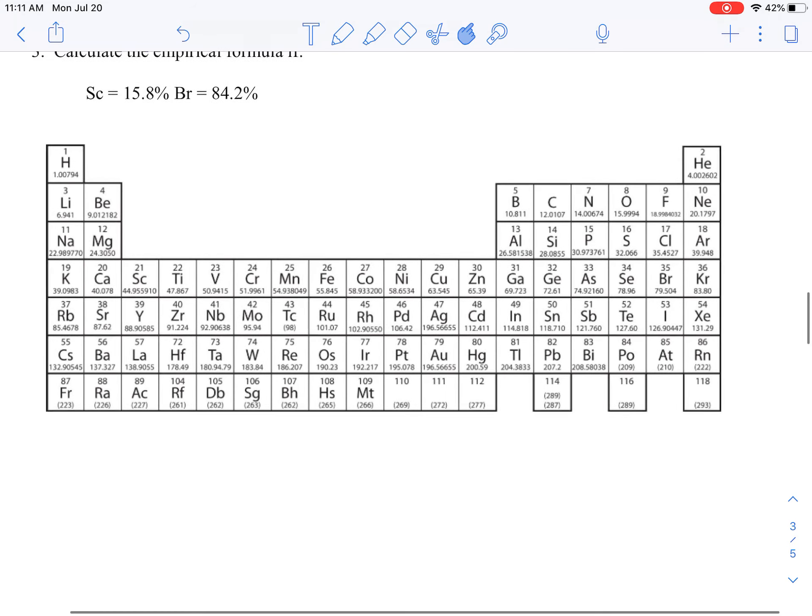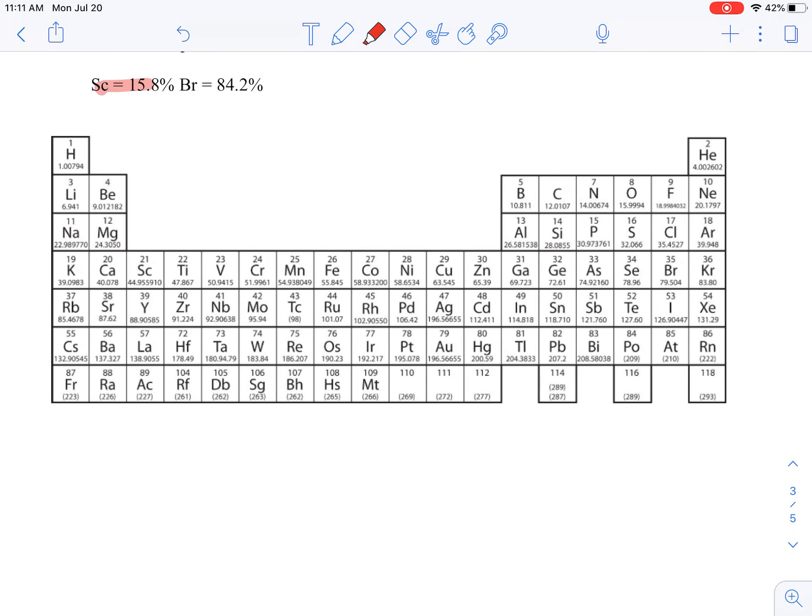So you'll notice that we have 15.8% scandium here and 84.2% bromine here. So what we're going to do is make some assumptions. Now you can pick any number you want here, but I'm going to pick the number that makes my life easy. I'm going to assume that I have 100 grams of ScₓBrᵧ.